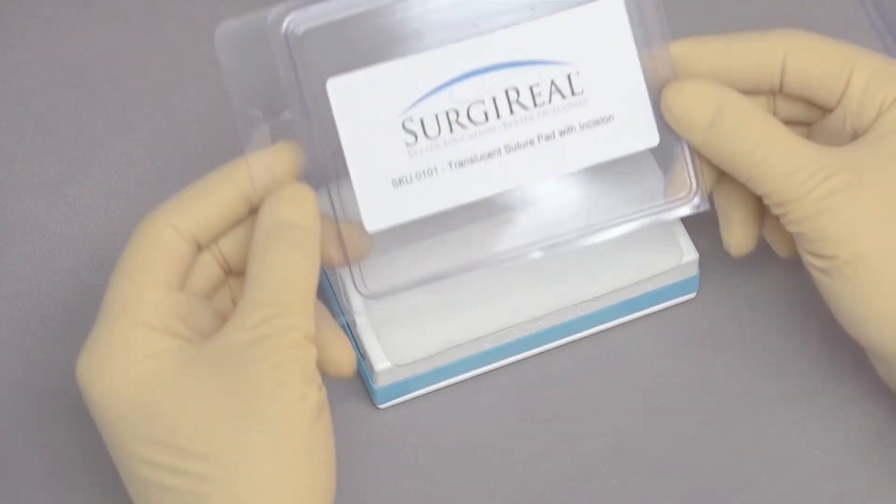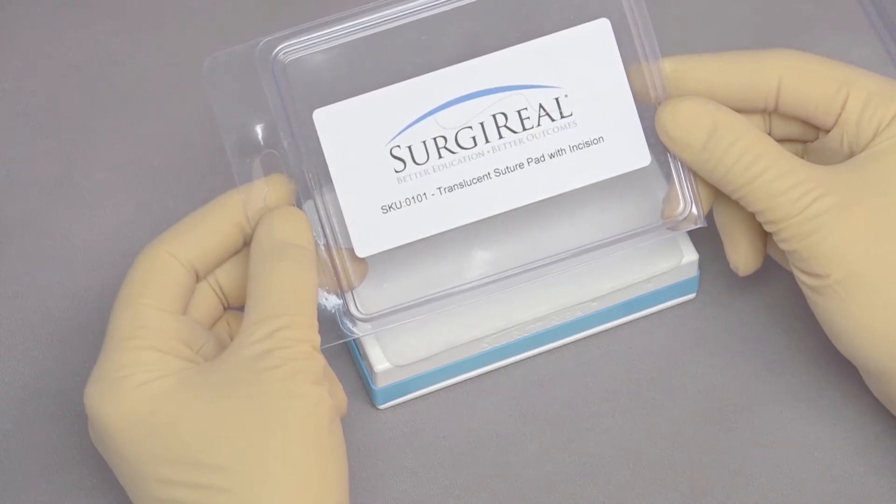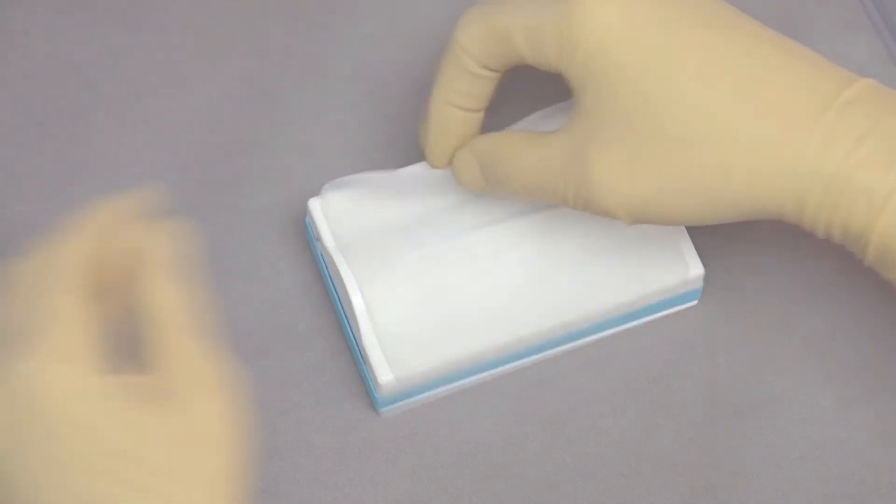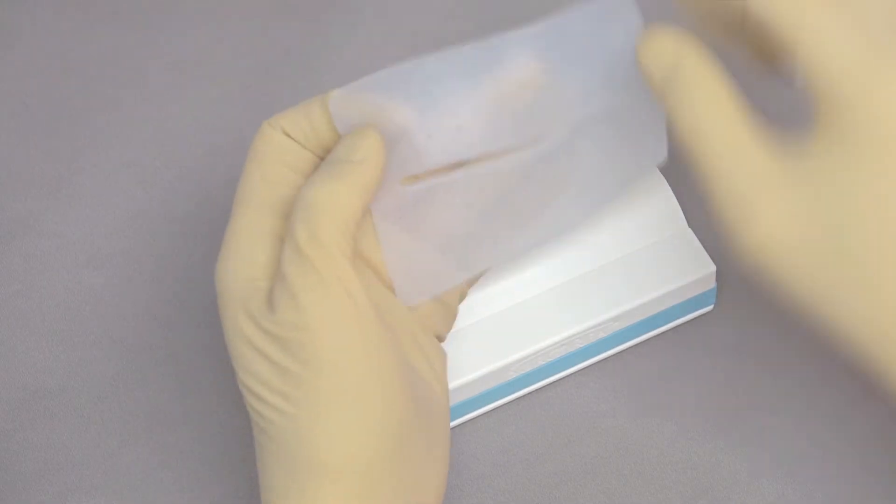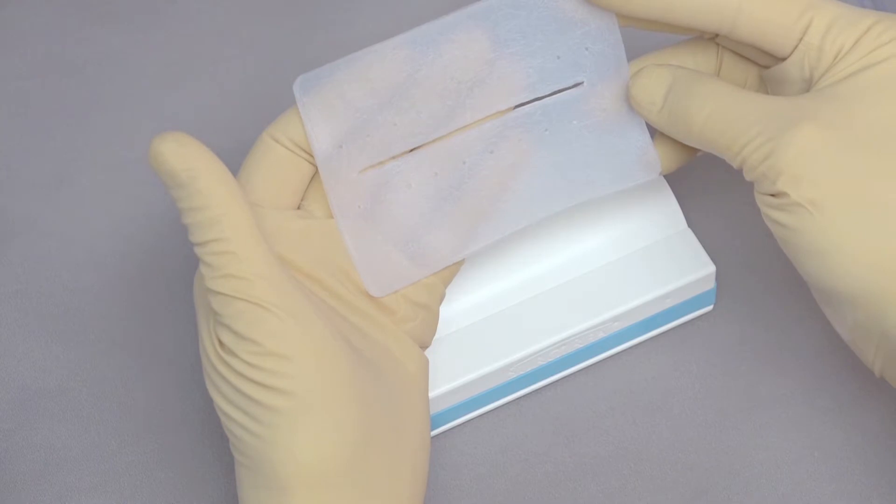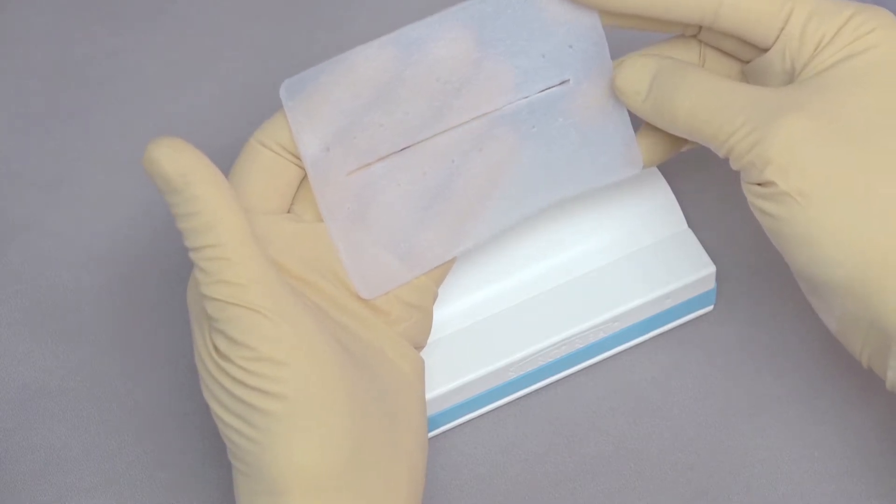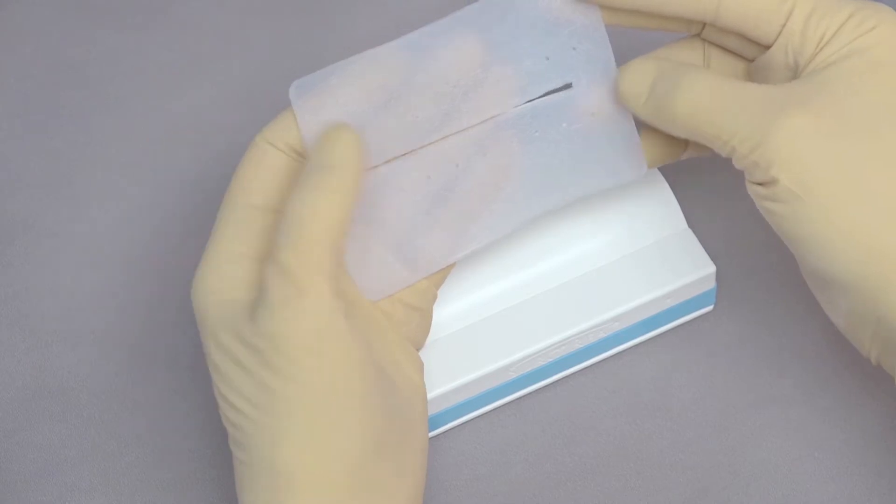Today we're going to practice suturing using a surgical translucent suture pad that has a pre-made incision. If you look at the pad, it has little holes in it to represent evenly spaced dots that you can use either to place your suture needle through or use to determine whether your suture bites are even.